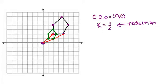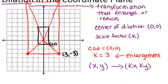If your scale factor is less than 1, then your shape will get smaller. And if the scale factor is bigger than 1, then your shape will get bigger. And you can always use this rule to help you figure out the coordinates as well.